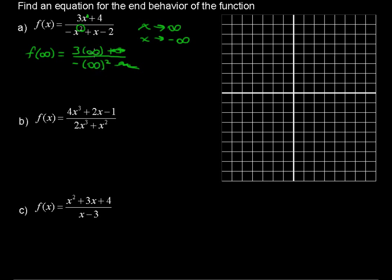So, 3 times infinity over infinity squared. Well, the bottom, the denominator, is going to grow much faster than the numerator. So this is going to go toward 0, eventually, because we're going to have something divided by something really big. So I'm going to say y equals 0. That's going to be the equation when the degree in the numerator is greater than the degree in the denominator.